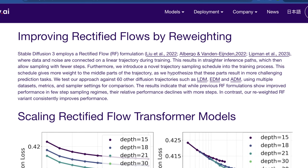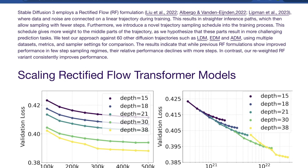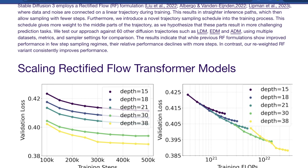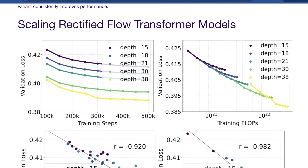Another thing they get into in the paper is what they call improving rectified flows by reweighting. Basically this is how they handle noise and hiccups in training while creating a model. By using the rectified flow formulation — RF — this helps straighten inference paths and allows sampling in fewer steps, making it cheaper to train these models and helping keep them on track so fewer runs have to be thrown out entirely. They tested their approach against 60 other diffusion trajectories such as LDM, EDM, and ADM using multiple datasets, metrics, and sampler settings. The results show that while previous RF formulations showed improved performance in few-step sampling regimes, their version consistently improves performance across more steps as well.